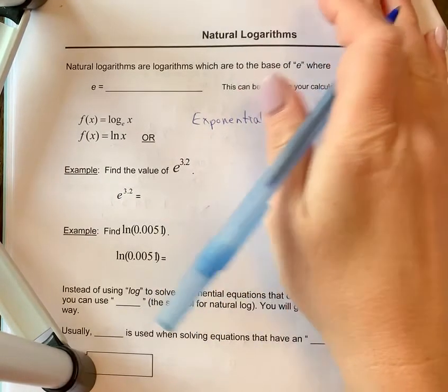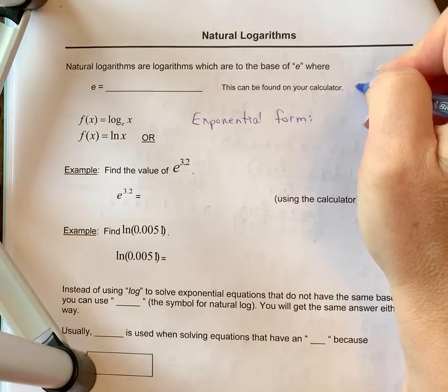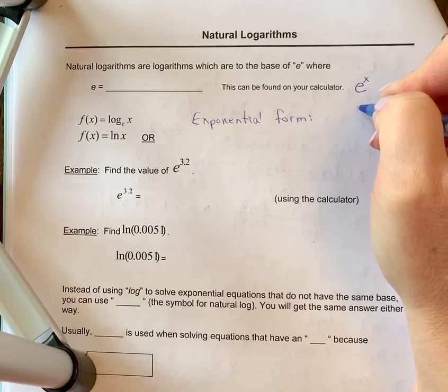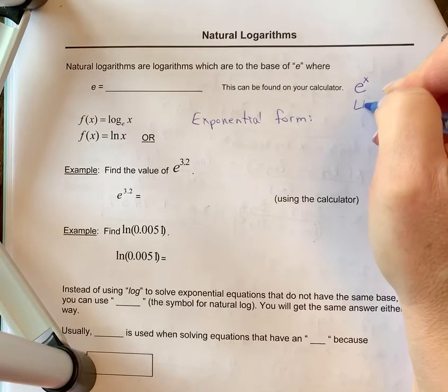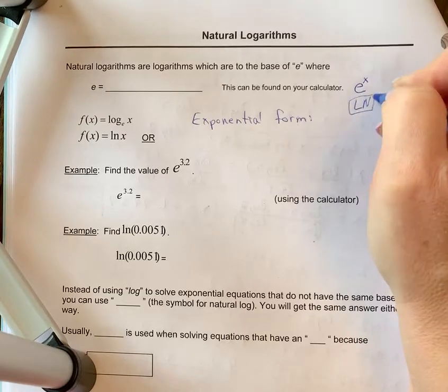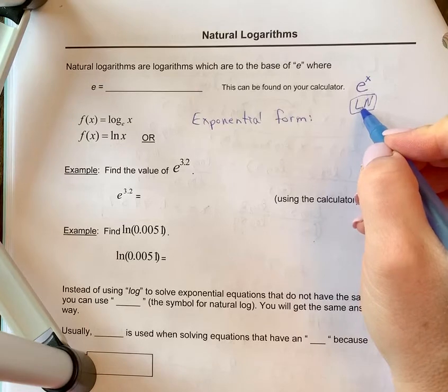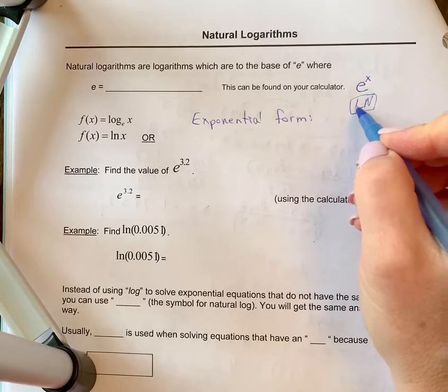You're going to look for, most calculators have a button that would be e to the x. It's often near the log button, and it's often above a button that says ln. That's where it is on my calculator. We'll talk about that button more today too. This is actually the natural log button.